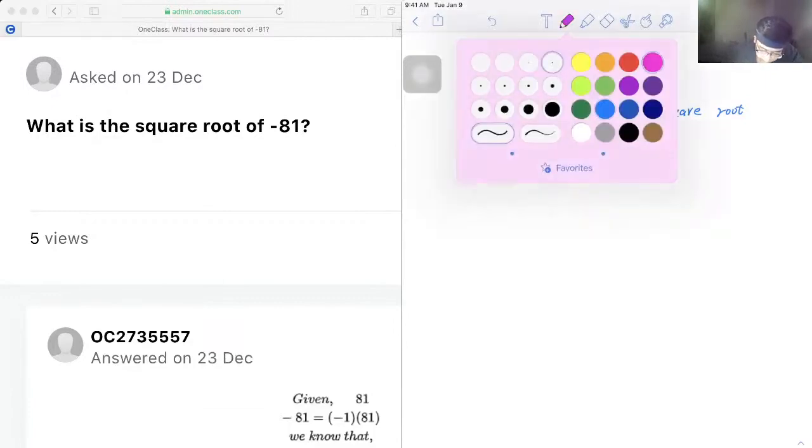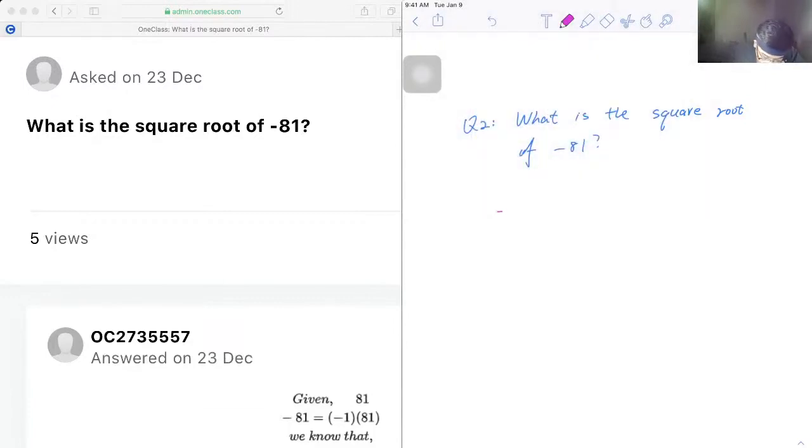Okay, so first we know negative 81 can also be written as negative 1 times 81. And the reason why we want 81 to be separated is because 81 is a perfect square, because 81 is equal to nine times nine.